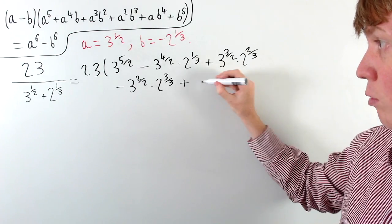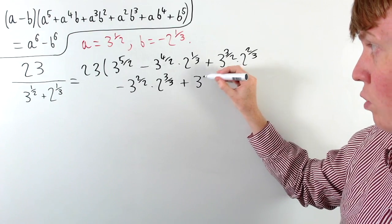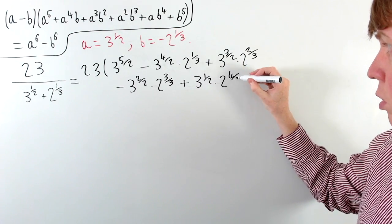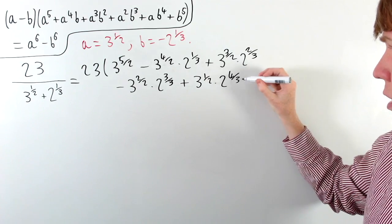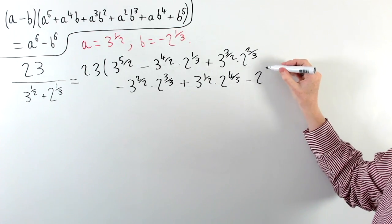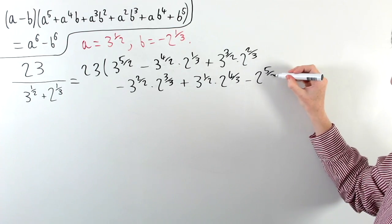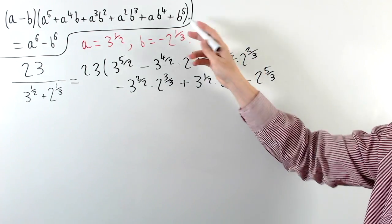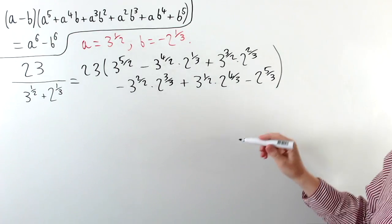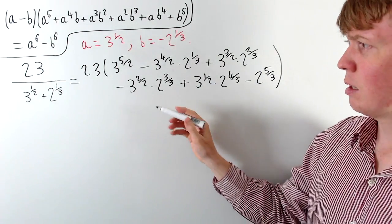Then we have plus 3 to the half times 2 to the 4 over 3, and finally minus 2 to the 5 over 3 for the b to the 5 term without any a's. So this is our whole numerator in unsimplified form.